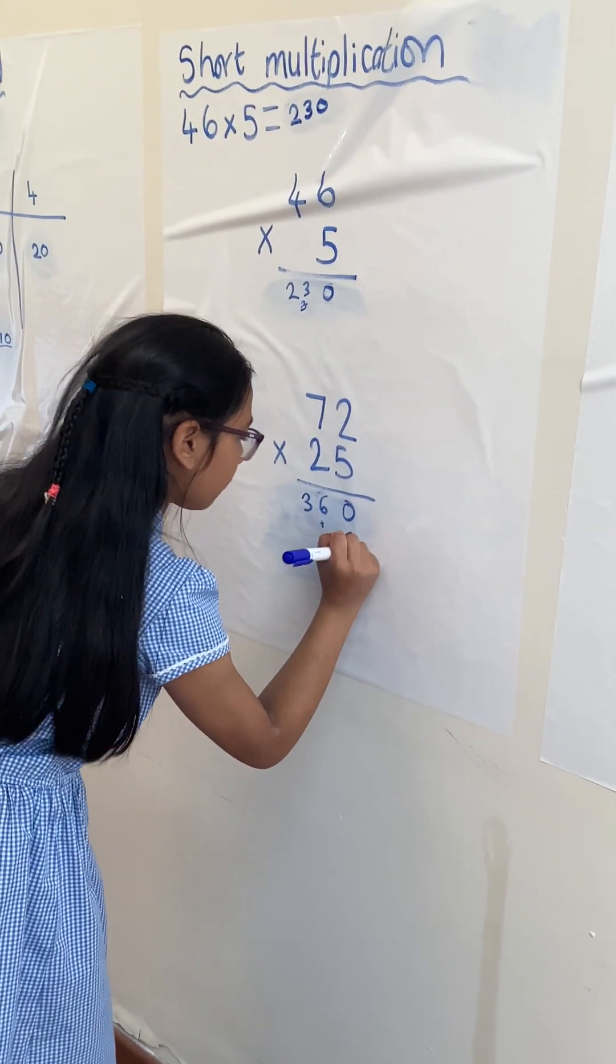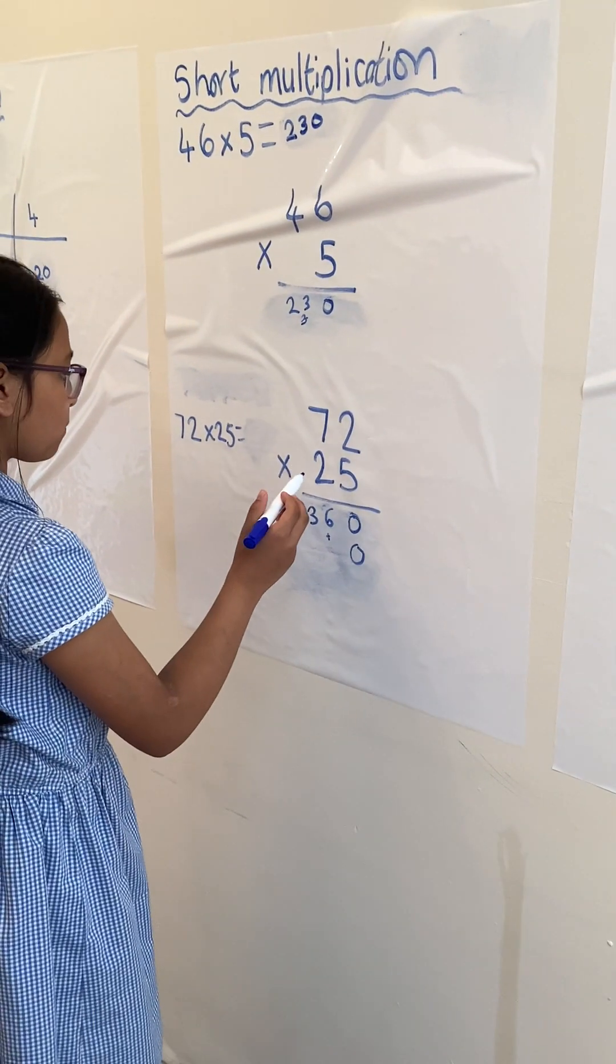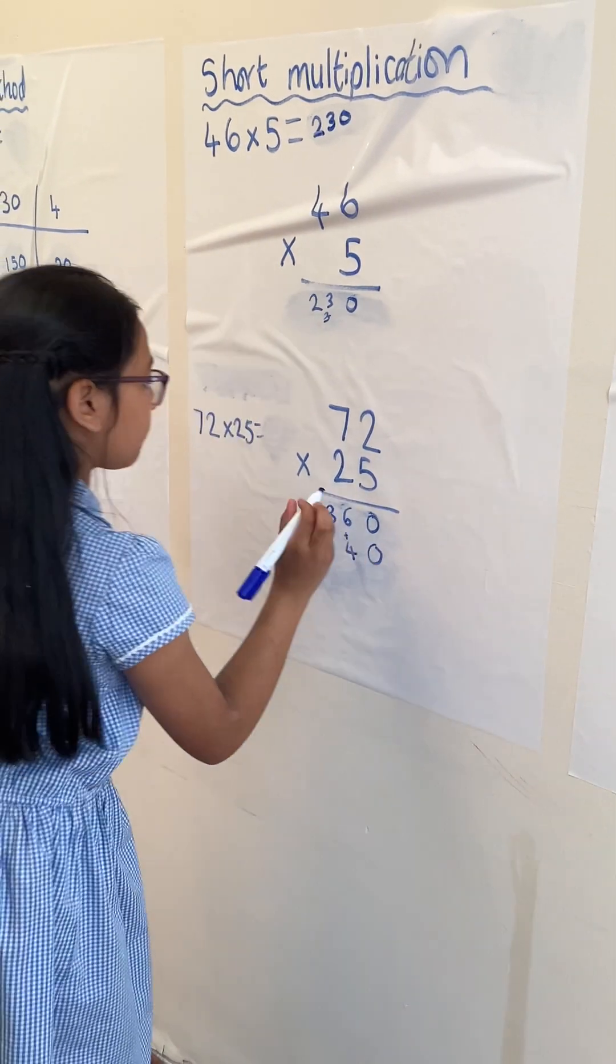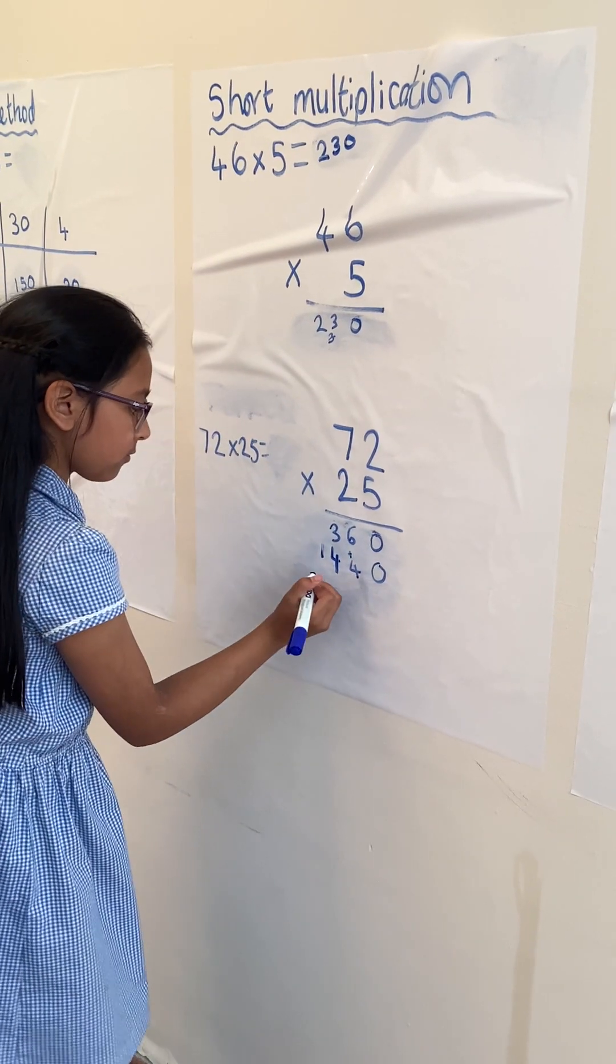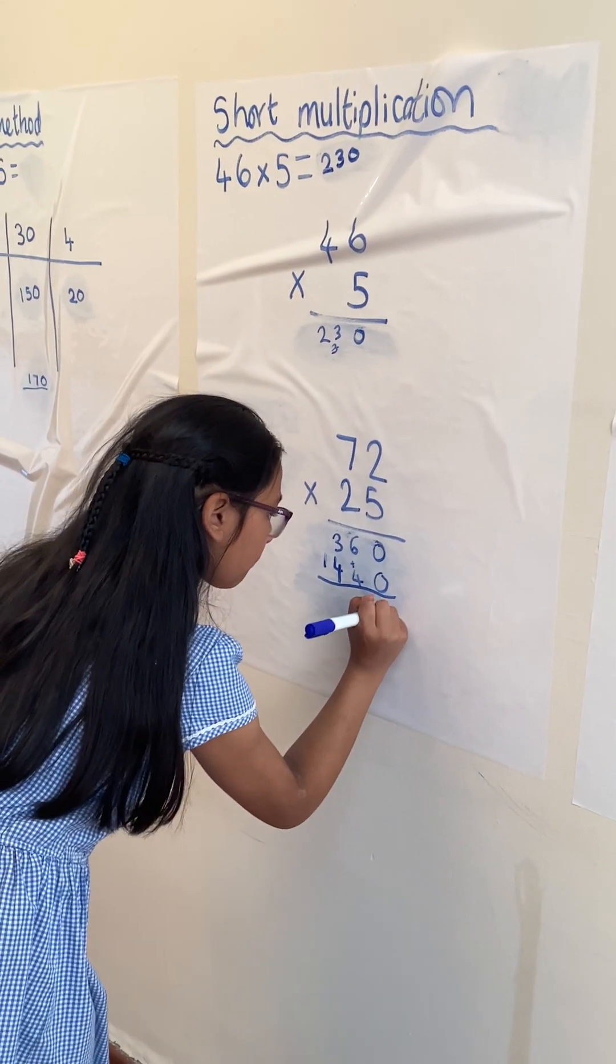We always put a sneaky 0 in, and that's because we're multiplying 20 times 2, and not 2 times 2. And then we add together our numbers, starting again with our lowest value column.